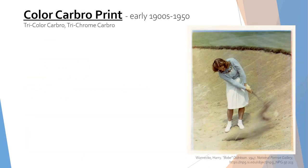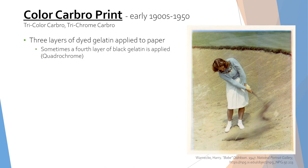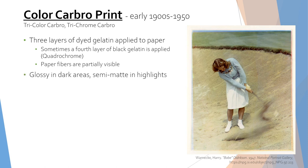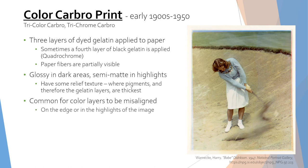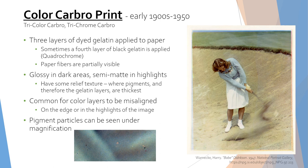Color Carbro prints were used from the early 1900s to 1950. These consist of three separate layers of dyed gelatin developed from a photographic negative and then applied to a paper support. Sometimes a fourth layer of black gelatin is applied, known as a quadrochrome. The paper fibers are partially visible through the layers of gelatin. The print will have a glossy appearance in the dark areas with a semi-matte appearance in the highlights. It will also have some relief texture due to the multiple layers of gelatin — highly pigmented areas where the gelatin is thickest will be taller than the non-pigmented areas. It is common for the colors to be misaligned since they are applied in separate layers, which can be seen along the edges or in the highlights of the image. The pigment particles that give the gelatin color can be seen under magnification.